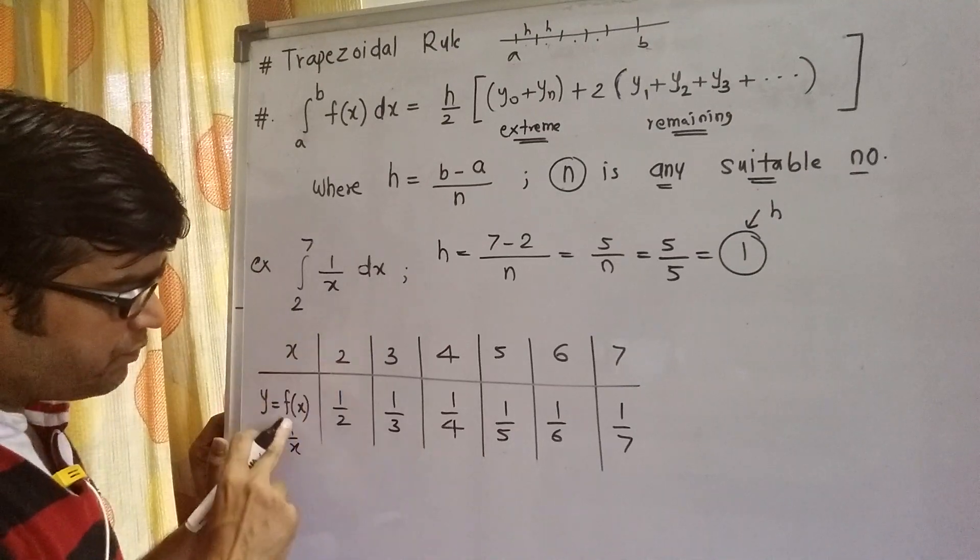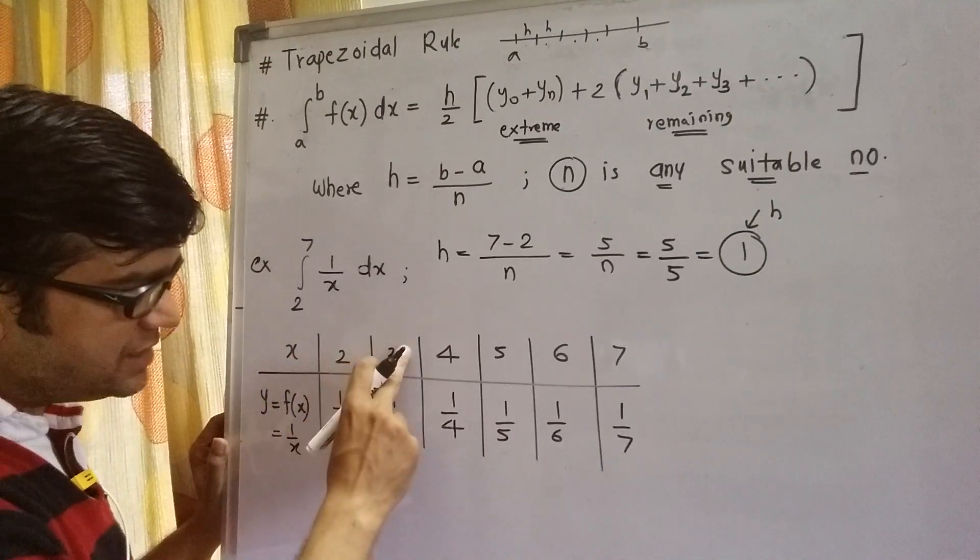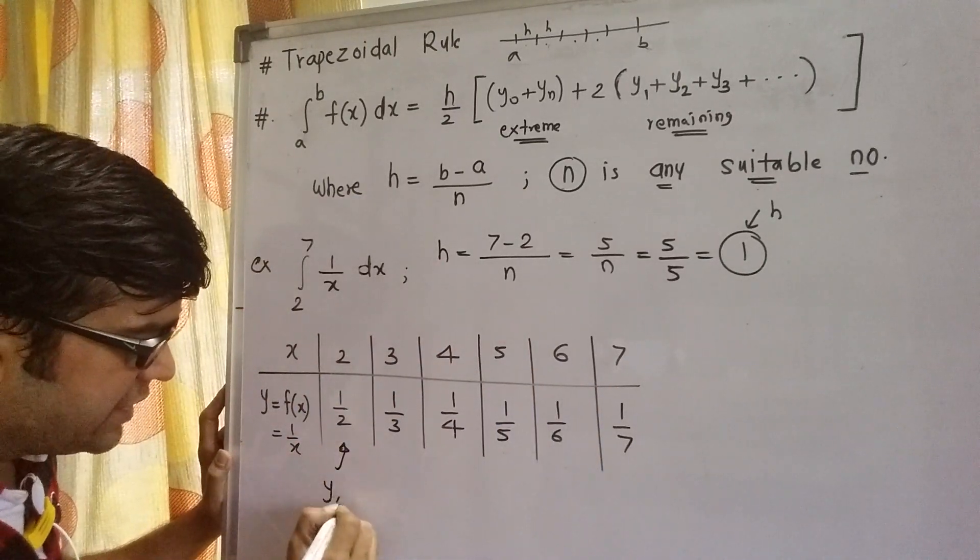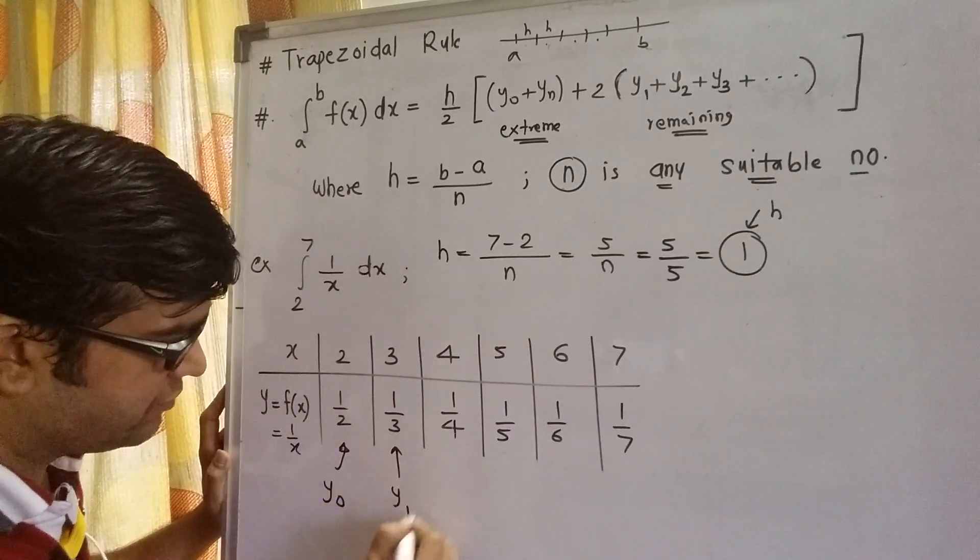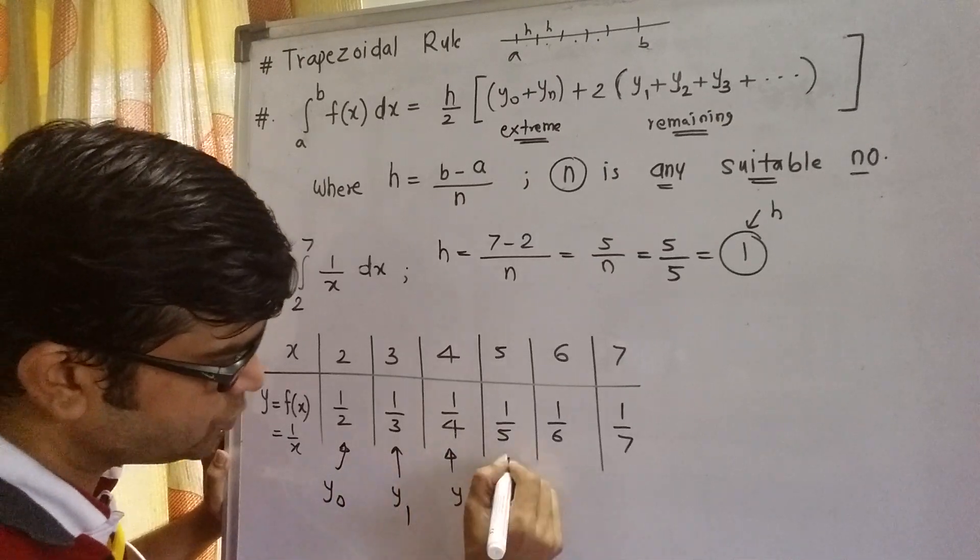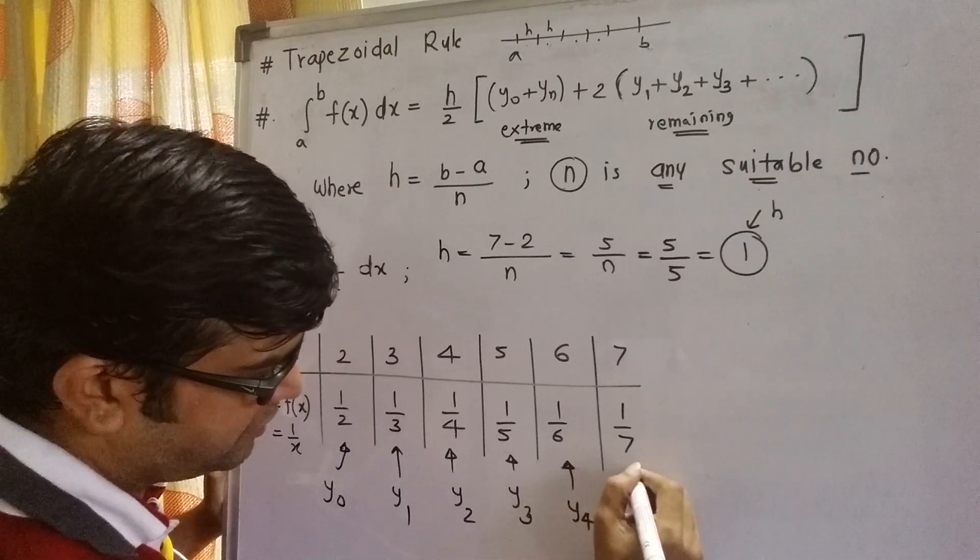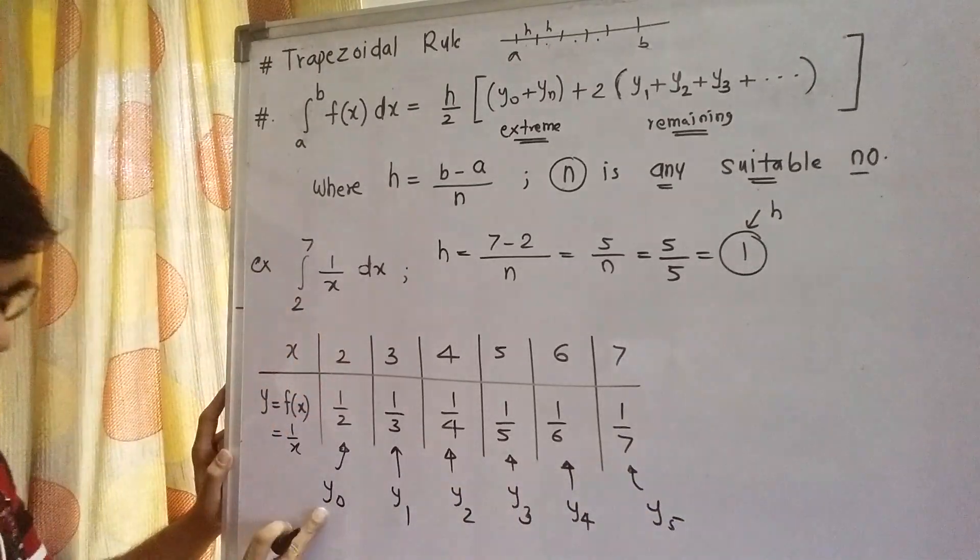So when x is 2, f(x) will be 1 by 2. When x is 3, f(x) will be 1 by 3, and so on. This is ordinate y0. This is y1, y2, y3, y4, y5, all in a sequence starting from y0.